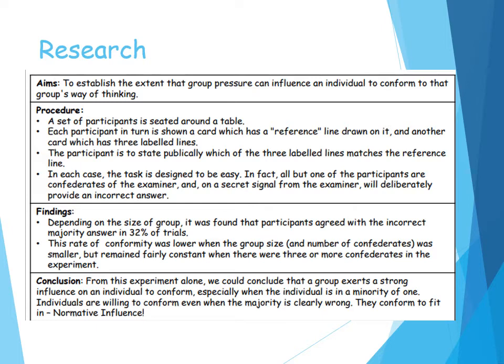123 American students took part, and the confederates gave the wrong answer. It was recorded whether the participants would publicly state the correct answer or go along with the group norm. They found that depending on the size of the group, the majority went along and gave the incorrect answers on 32% of the trials, and 75% conformed at least once.